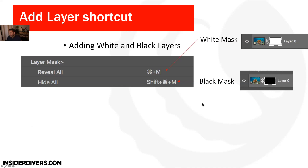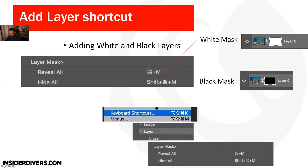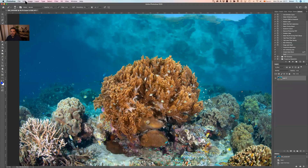Another useful tip is to add keyboard shortcuts for creating masks — a white mask and a black mask. I have no idea why Photoshop doesn't do this automatically, or why they call them 'Reveal All' and 'Hide All.' I use Command+M for a white mask and Shift+Command+M for a black mask. To create these shortcuts, go to Edit, then Keyboard Shortcuts, then Layer, and scroll down to 'Reveal All.'